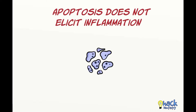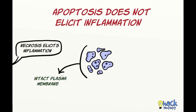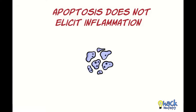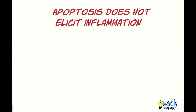It is important to understand that apoptosis does not elicit any inflammation, unlike another form of cell death called necrosis. This is because apoptotic bodies have an intact plasma membrane and prevent any content from leaking out to the interstitial space. Also, apoptotic bodies are quickly recognized by phagocytes and removed from the environment.